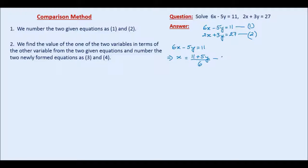And from the second equation that is 2x plus 3y equal to 27, we get the x value as 27 minus 3y over 2. This becomes our equation number four.